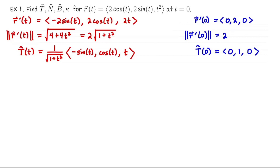That's easy to read off from the velocity vector — we want a unit length vector pointing in the same direction as the velocity vector, so you could have anticipated that this would have to be the unit tangent vector.